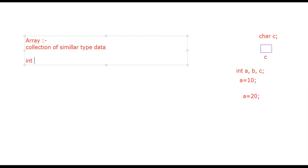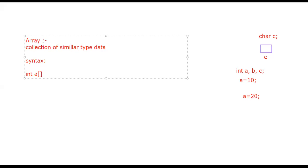If you are going to declare an array, this is the syntax. First of all, we require the data type in which you want to store values inside the memory. Then the name for that particular array, then open the square bracket and inside that provide its size.